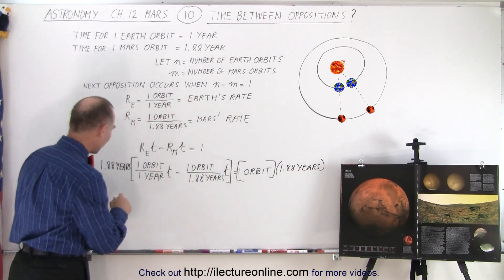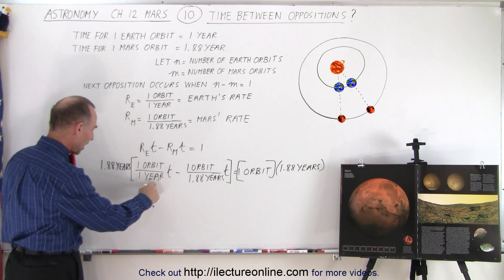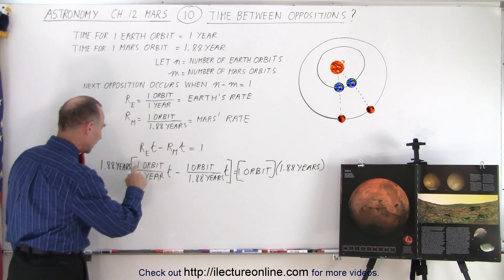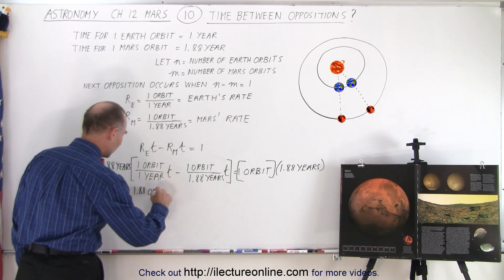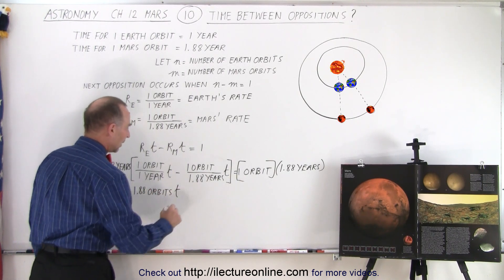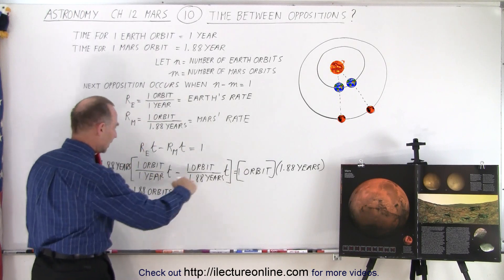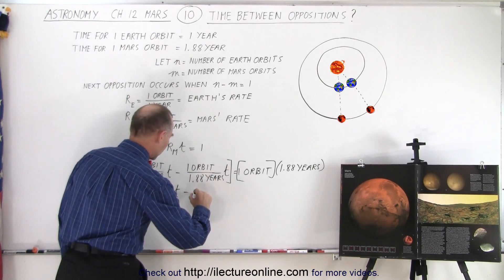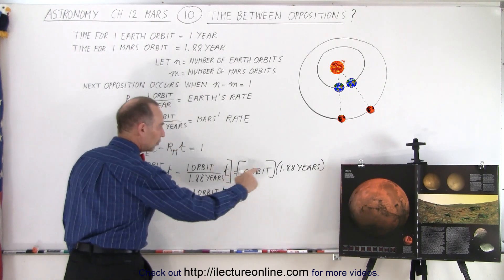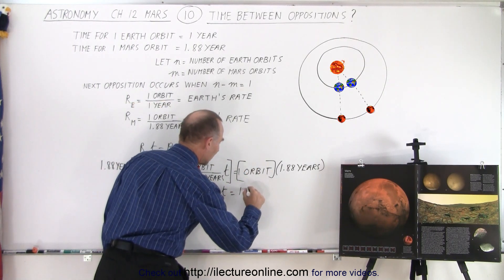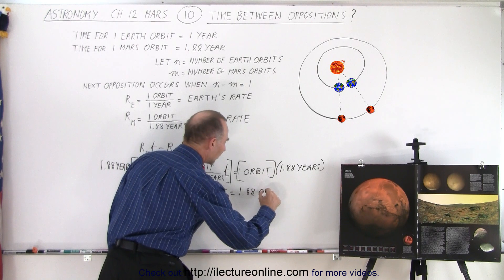Then on the left side, notice that years will cancel out and we end up with 1.88 orbits times time. So 1.88 orbits times time minus here the 1.88 years cancel out and we're ending up with 1 orbit times time equals 1.88 orbits times years.